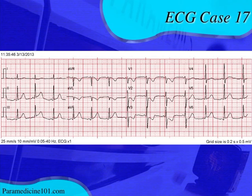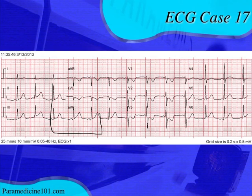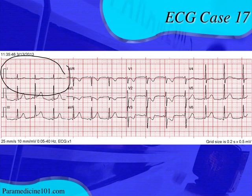Here's the 12-lead obtained from this patient. Right off the bat you can see that it is not normal. Let's start with the rhythm — it looks to be a sinus rhythm. You have a P-wave for every QRS complex, it's within a normal rate, you have upright P-waves in the limb leads and negative P-waves in AVR, so it looks to be sinus. Looking at the axis using the quick quadrant method, lead I is positive and AVF is positive, so the QRS axis is normal in the frontal plane.